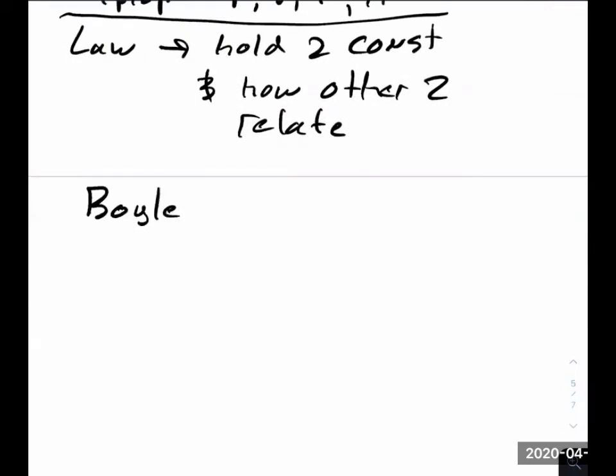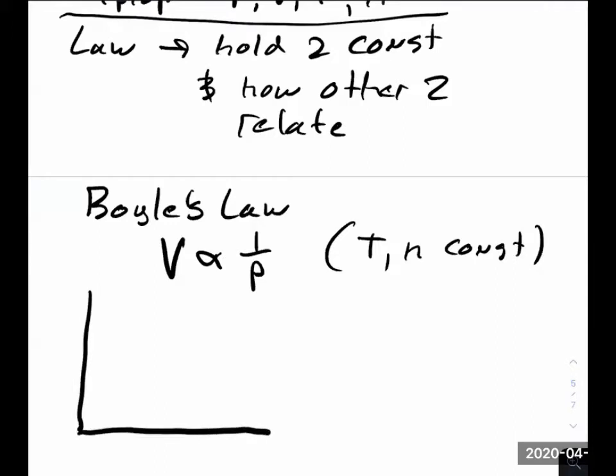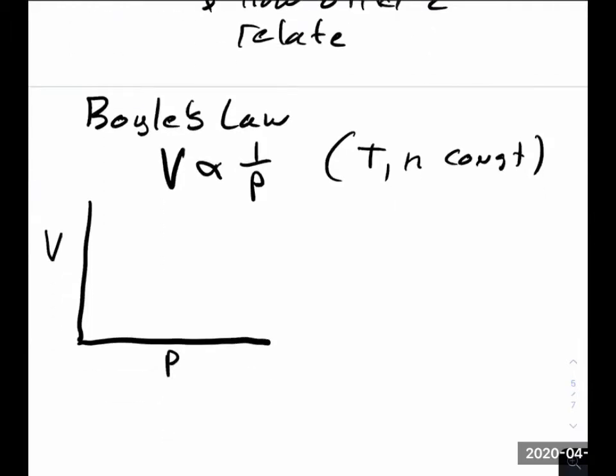The first one is called Boyle's Law. These laws go back a long time. You can look up Robert Boyle and when he lived and where he was from. Basically, Boyle's Law says that volume is inversely proportional to pressure, which means we're holding temperature and moles constant. An inverse relationship, if I put volume here and pressure here, keeping the other ones constant, will always be a parabola like this. The idea is when pressure is high, then the volume will be low. If I have very high pressure, the volume goes down.